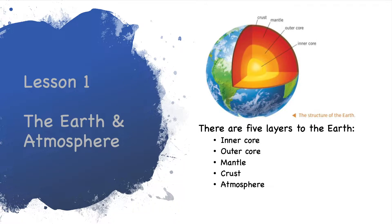The inner core is solid and found at the centre of the planet. The outer core surrounds this and is liquid. The core is mainly made from iron and nickel. The mantle is next. This is mostly solid rock but it can flow. This flow is very slow and is driven by something called convection currents, which happen as hotter rock rises and cooler rock sinks.